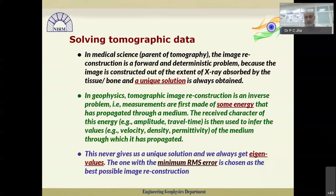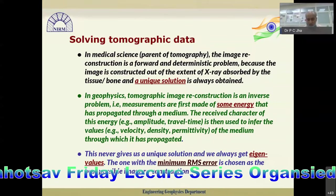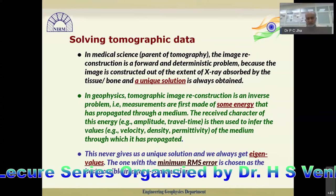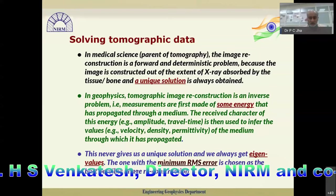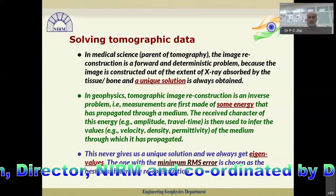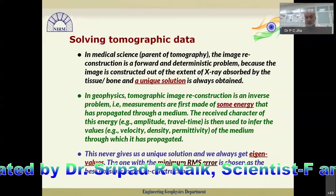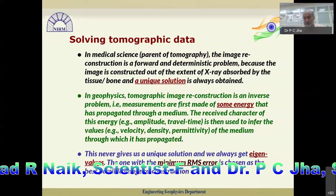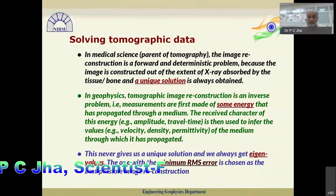In medical science — the parent of tomography — image reconstruction is a forward and deterministic problem, because the image is constructed from the extent of X-ray absorbed by tissue or bone, and a unique solution is always obtained. In geophysics, however, the tomographic image construction is an inverse problem. The measurements are first made of energy propagated through a medium; the received character — amplitude and travel time — is used to infer values of velocity, density, and permittivity. This never gives a unique solution; we always get eigenvalues, and the one with minimum RMS error is chosen as the best possible image reconstruction.